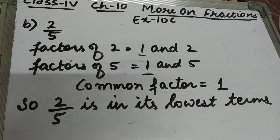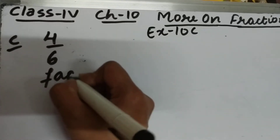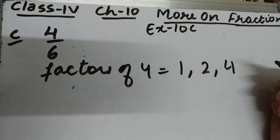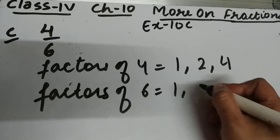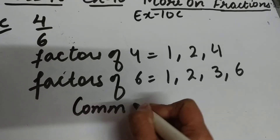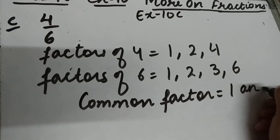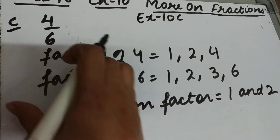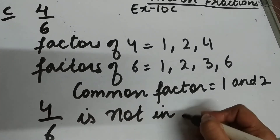Part c is 4 upon 6. Factors of 4 are 1, 2, and 4. Factors of 6 are 1, 2, 3, and 6. The common factors between 4 and 6 are 1 and 2 — there are two common factors. So that means 4 by 6 is not in its lowest terms.